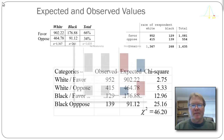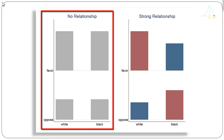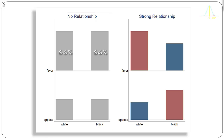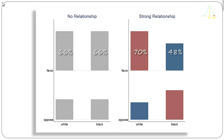We can also show this graphically — I created this graphic in Stata. On the left-hand side is the situation where we hypothesize that the null hypothesis is correct: the height of those columns are both 66% for favor and 34% for oppose, comparing across black and white. If we were to see that situation, we would fail to reject the null hypothesis. On the right-hand side, the white respondents' maroon column for favoring capital punishment is taller than the blue column for black respondents. The bigger the difference in column heights, the more likely we are to reject the null hypothesis.